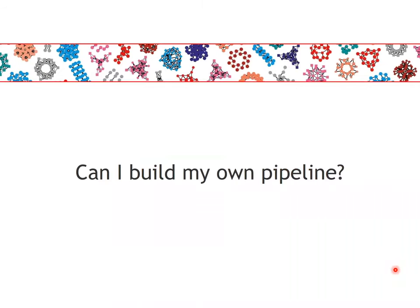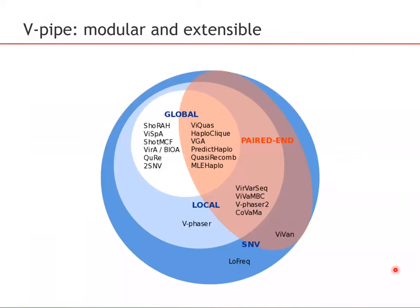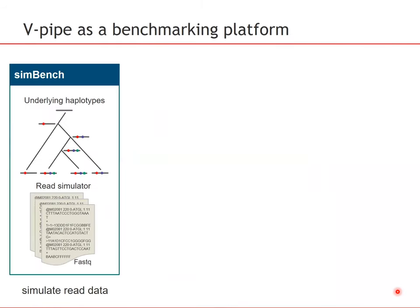Can you build your own pipeline? Yes, vPipe is very supportive of this. There are a number of tools developed in the research community — either for SNV calling, local reconstruction, or global reconstruction. Some use paired-end data, some work only on single-end data, so there's a range of tools depending on the application scenario, and they can all be built in different constellations of the pipeline.